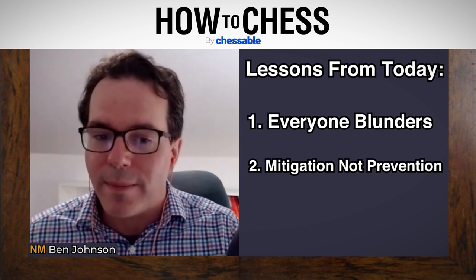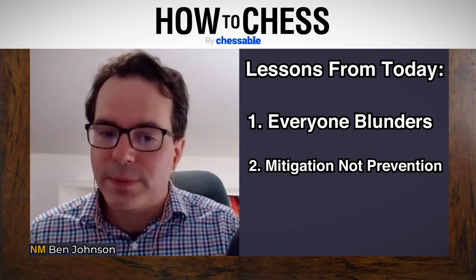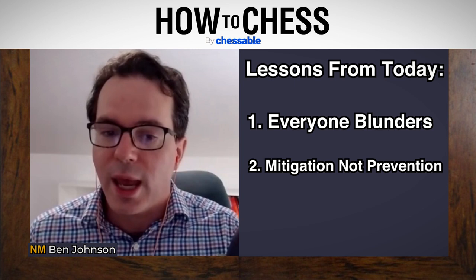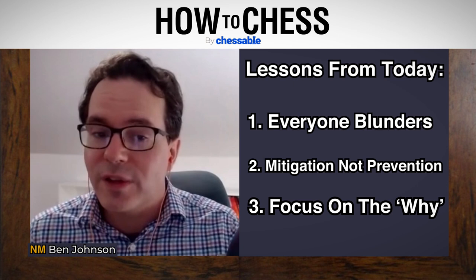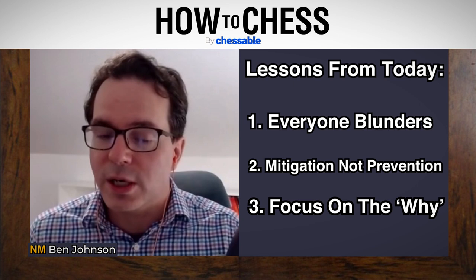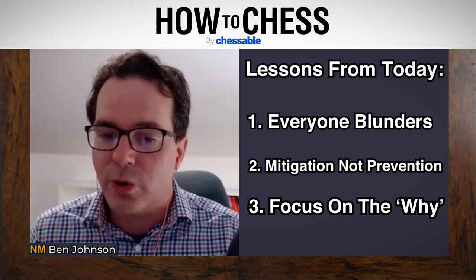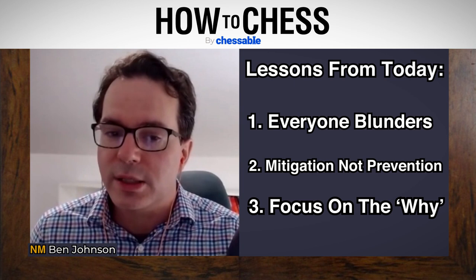Number two: the goal with blunders should be mitigation, not prevention. If every grandmaster has an occasional blunder, then us mortals are going to blunder too. Have reasonable expectations, but do the things Eugene said to limit them — be conscious of looking for checks, captures, and threats, and be conscious of looking at the whole chess board. Number three: focus on the why. Don't just beat yourself up for blundering — think about why it happened. Did you overlook a certain type of tactic? Was there a psychological factor? That awareness, especially in slower games, can be the key. I hope this was helpful — we will catch you next time.